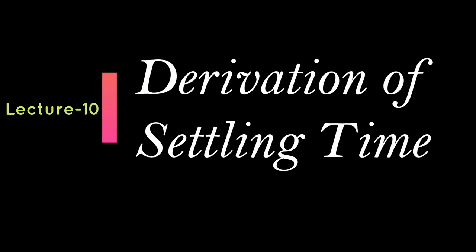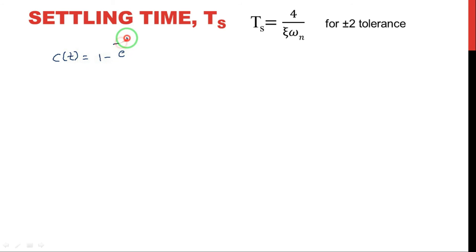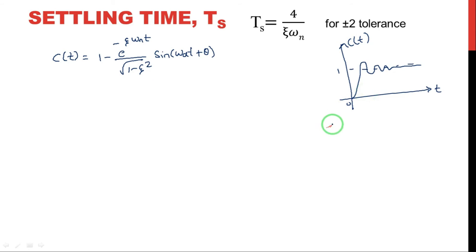Now we will move into the derivation of settling time. Take the output response of the underdamped system: 1 − e^(−ζωₙt) / √(1−ζ²). There are two components in the output response: an exponential component and a sinusoidal component. The exponential component plays the key role in settling.